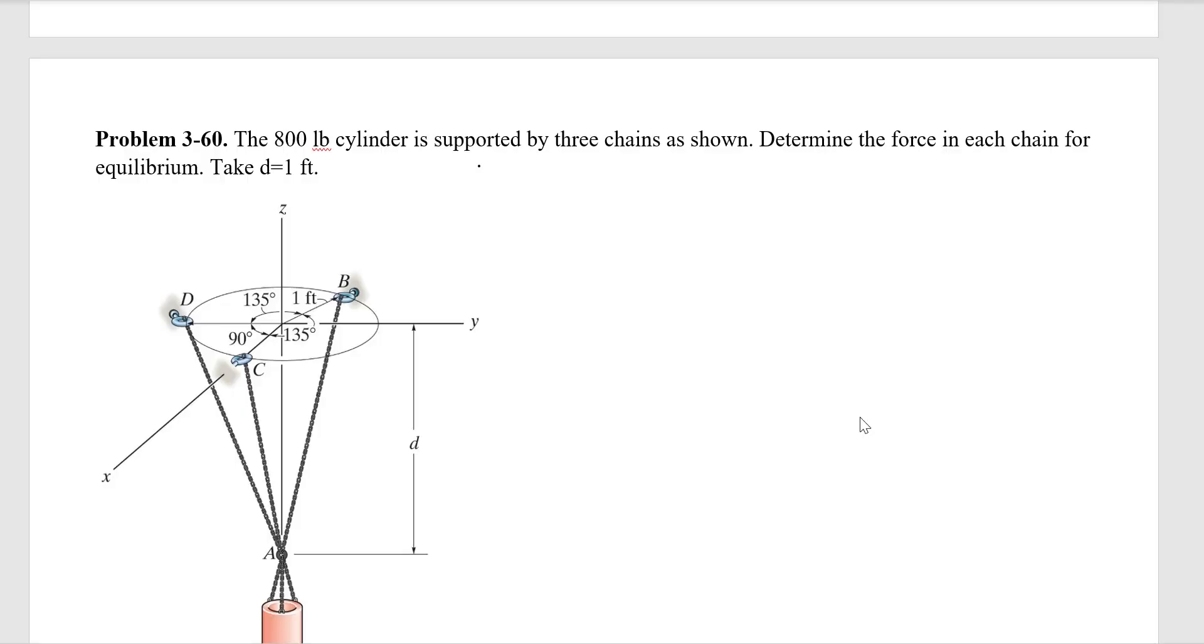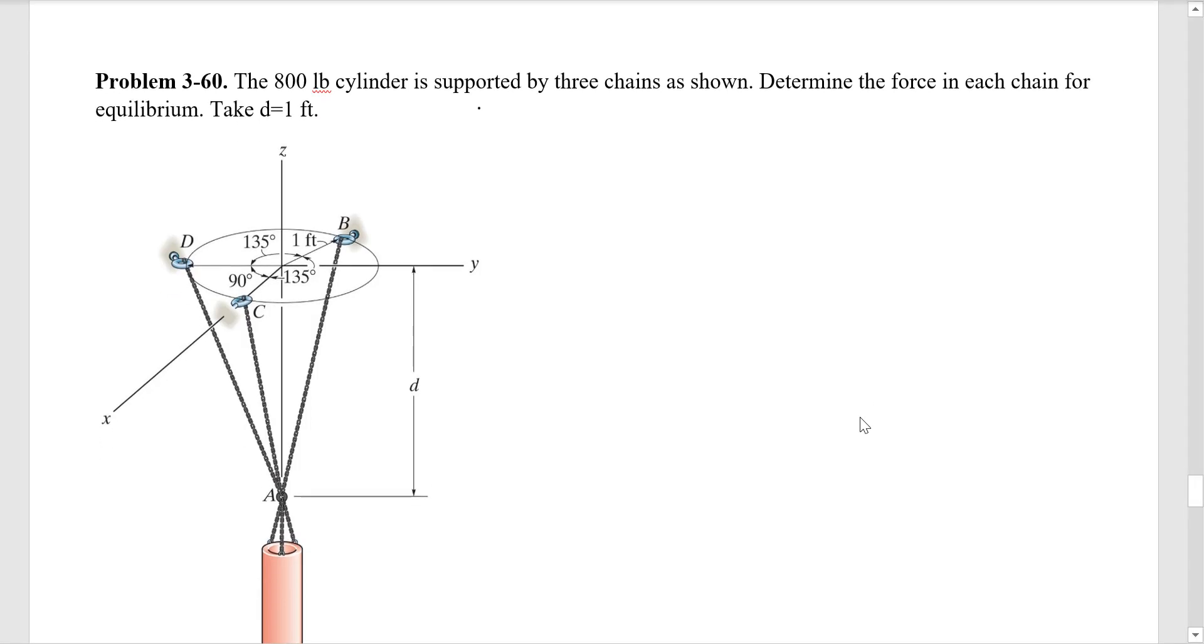Hello everyone, today we are going to solve problem 60 of chapter 3. The 800 pound cylinder is supported by three chains as shown. Determine the force in each chain for equilibrium. Take d equals one foot.